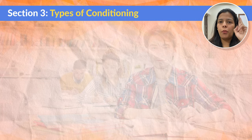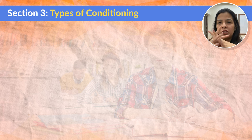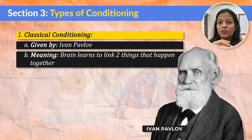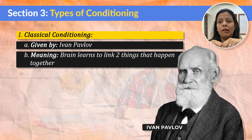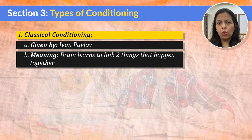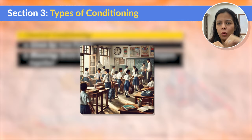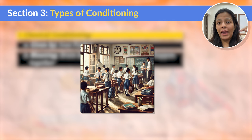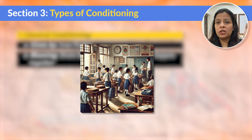Now let us look at two important types of conditioning which are fundamental to the Behavioral Development Theory. The first type is called Classical Conditioning. This concept was given by the great psychologist Ivan Pavlov. Classical conditioning happens when our brain learns to connect two things that happen together. Recall your school days — as soon as the bell rang, you used to close your notebooks, pack your bag, and leave the class. Because this behavior happens over and over again, you start associating closing your books and packing your bags with the bell ringing.